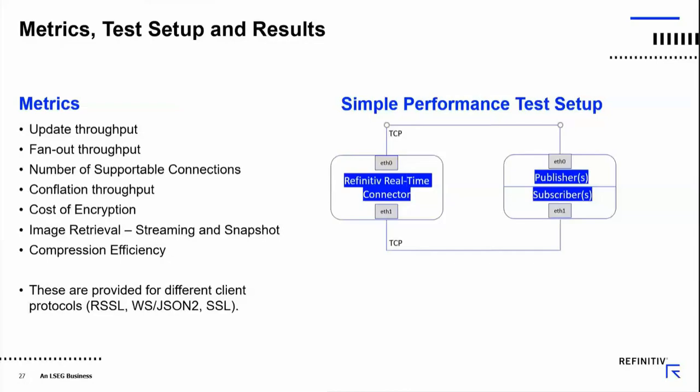For performance results, we use a very simple setup — the same one our CSP partners use for benchmarking. We publish various metrics including update throughput, fanout, number of connections supported, conflation throughput, and cost of encryption. We publish numbers for RSSL encryption. WebSocket encryption became available in 3.5.2 at the end of Q2, so we'll be publishing those numbers in Q4. We also measure image retrieval — streaming and snapshot — compression efficiency, and provide all metrics with different client protocols: WebSocket, RSSL, and SSL.